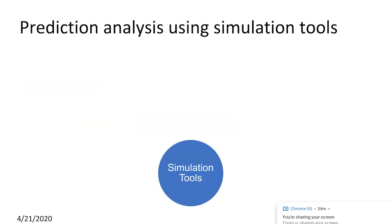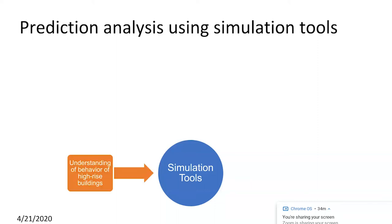Although technical software tools offer powerful simulation-based predictions, we also need to apply our own qualitative judgments to make predictions for future projects. These simulation tools help us understand building behavior, target sustainable design, and make better material choices.